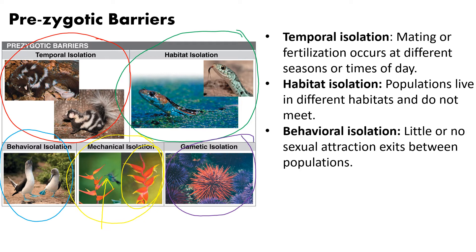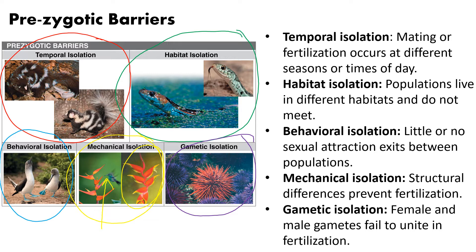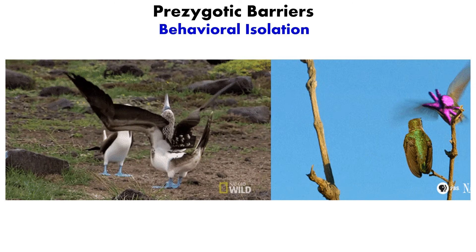The last type of prezygotic barrier is gametic isolation, which often occurs during mass reproductive events where organisms release sperm and egg into the environment. There is usually some type of chemical barrier where sperm and egg are just not compatible. For example, different types of sea urchins all release their sperm at the same time, but the egg and sperm of only the same species will actually unite.